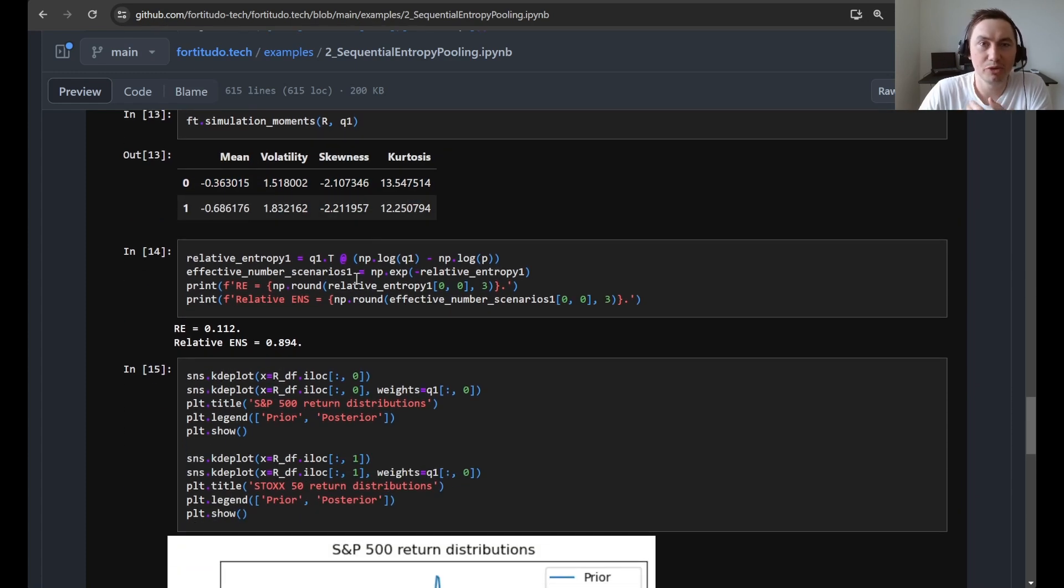So when we then compute the relative entropy and the effective number of scenarios for this sequential entropy pooling you can see that the relative entropy is lower and the effective number of scenarios is higher. So basically we got a better result using the views in a sequential way and on real world data.